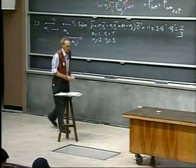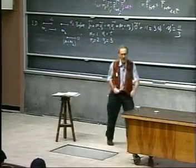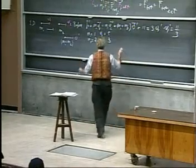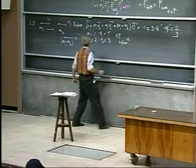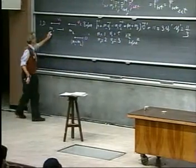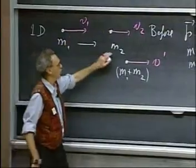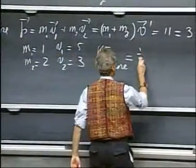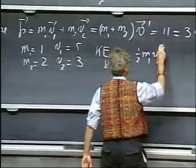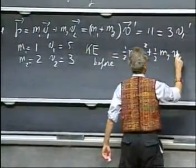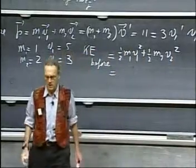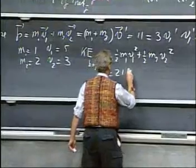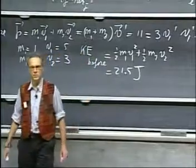Now there was a certain amount of kinetic energy before the collision. And of course, we can all calculate that. Kinetic energy before the collision. That is one-half m1 v1 squared plus one-half m2 v2 squared. One-half m1 v1 squared, one-half m2 v2 squared. How much is it? You can do that as well as I can. If you add that up, you'll find twenty-one point-five joules. Trivial to stick in the numbers.